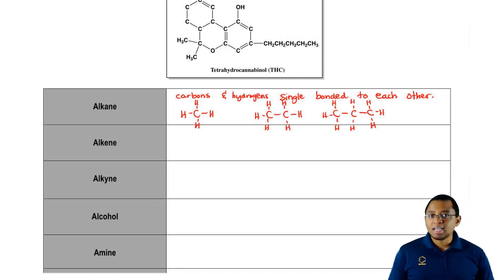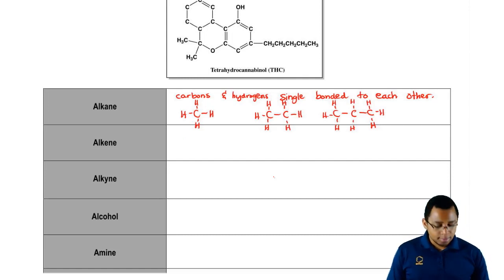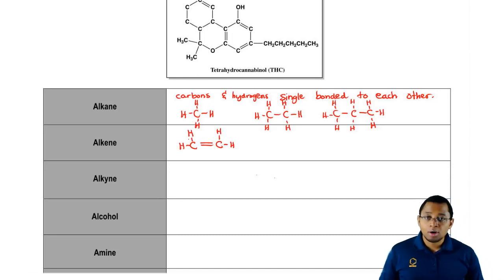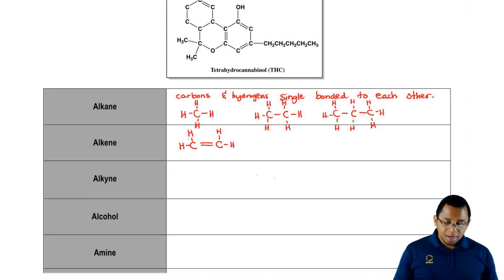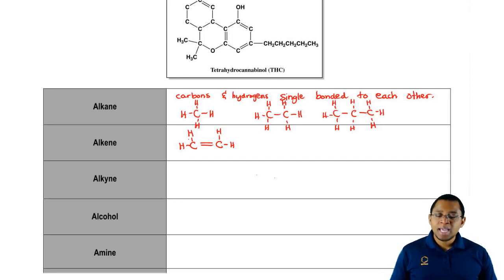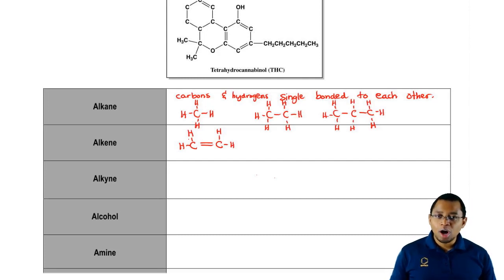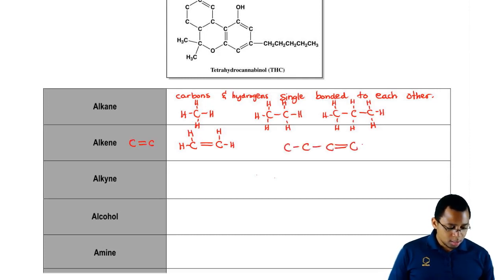The next type of functional group is called an alkene. An alkene is the same concept except now, instead of being single bonded, we'll have at least one double bond somewhere. This is early on in the semester, so you don't have to learn how to draw these yet. What's important is being able to identify it. The distinguishing characteristic of an alkene is that it has two carbons double bonded to each other. As long as you have a double bond somewhere, it'll be an alkene.